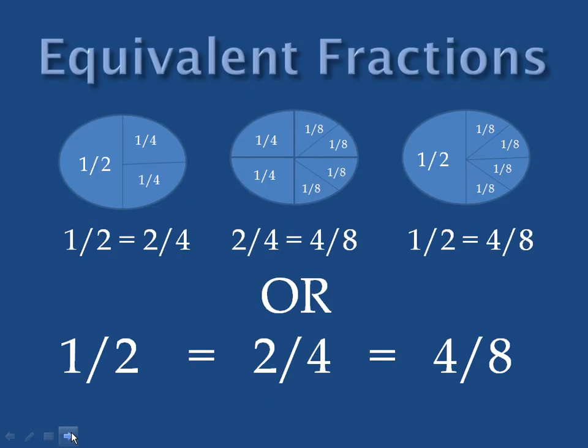Equivalent fractions. One half equals two fourths. Two fourths equal four eighths. One half equals four eighths. Or, one half equals two fourths equals four eighths. They are equivalent fractions.